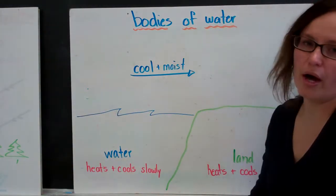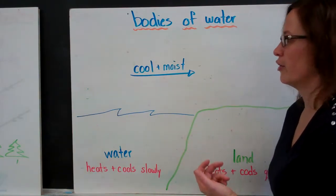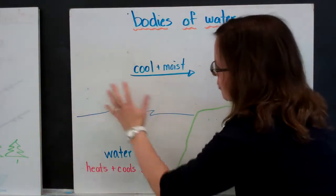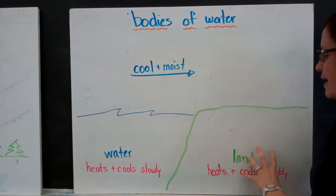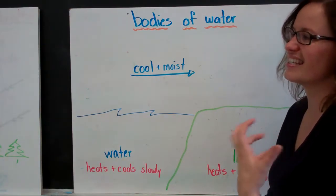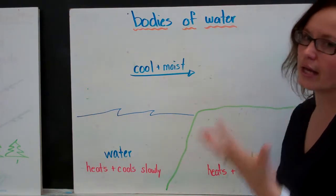Now bodies of water, specifically large bodies of water. You're not going to get this kind of effect from a pond. So we have our land and we have our large body of water. Land increases its heat very quickly. It gets hot quickly, it cools quickly.